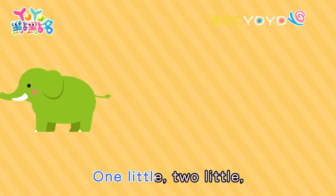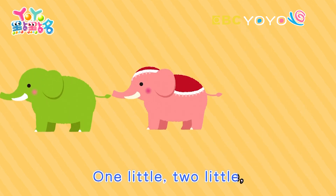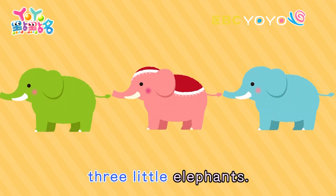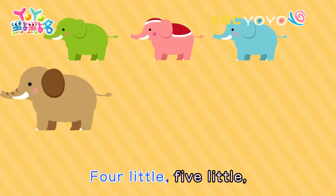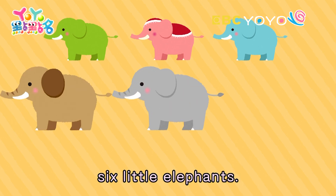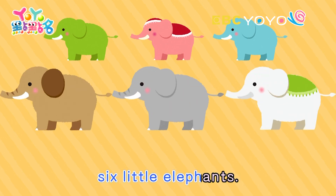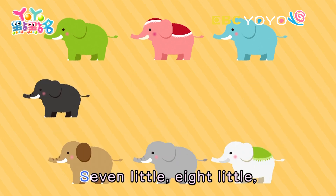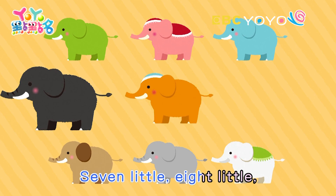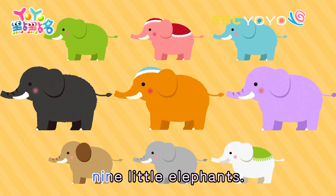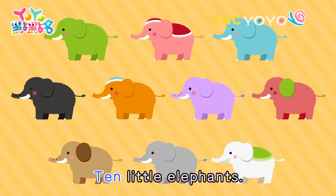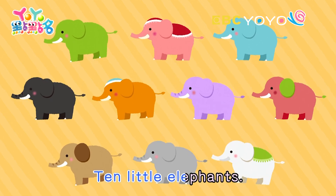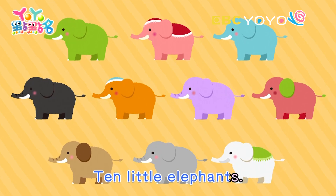One little, two little, three little elephants. Four little, five little, six little elephants. Seven little, eight little, nine little elephants. Ten little elephants.